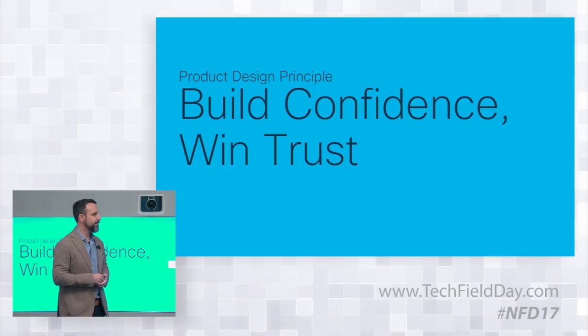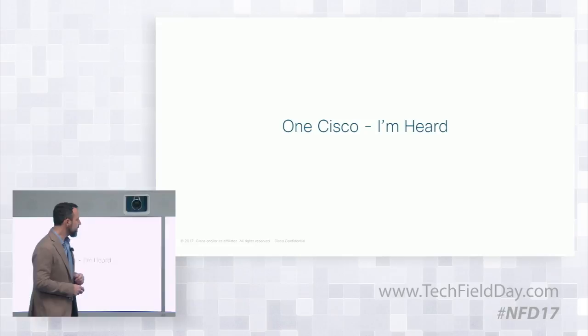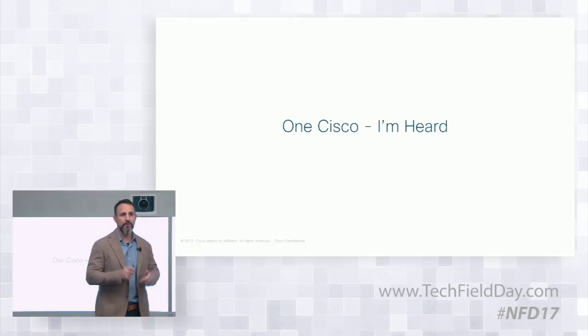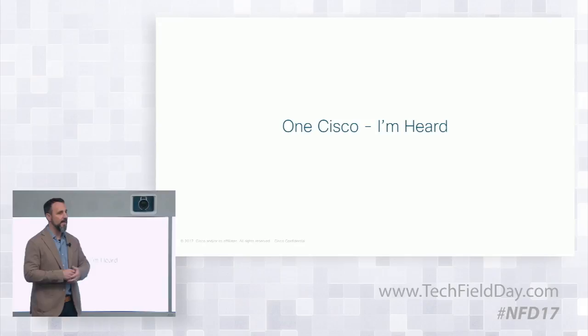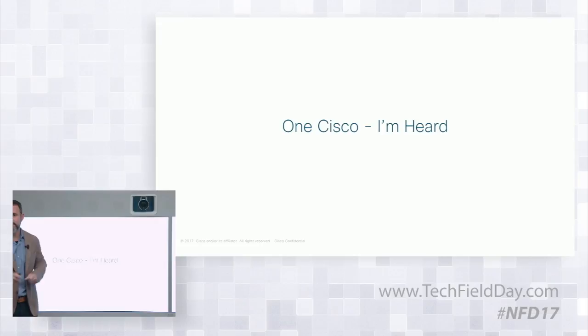The next principle is One Cisco. If you're using a tool like Prime or Epic EM today, you've got a deep investment — a lot of data in those tools, a lot that we already know about your network. As we introduce new tools, we don't want you to reinvent the wheel. We want to take that existing data and infrastructure, learn from it, and help you move forward with it rather than starting from ground zero.